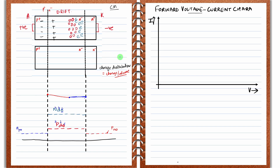As charge carrier concentration increases, conductivity increases, and therefore the resistance of the drift region actually reduces. Now, just because recombination happens here, it does not become zero — all charge carriers do not get lost. Remember, this is charge per unit volume. For every recombination happening, more p-plus charge carriers come from the p-plus side into the n-minus side. Similarly, for every electron lost, more electrons come from the n-plus side into the drift region. That is how charge moves, and when you have charge movement, you have current or conduction.